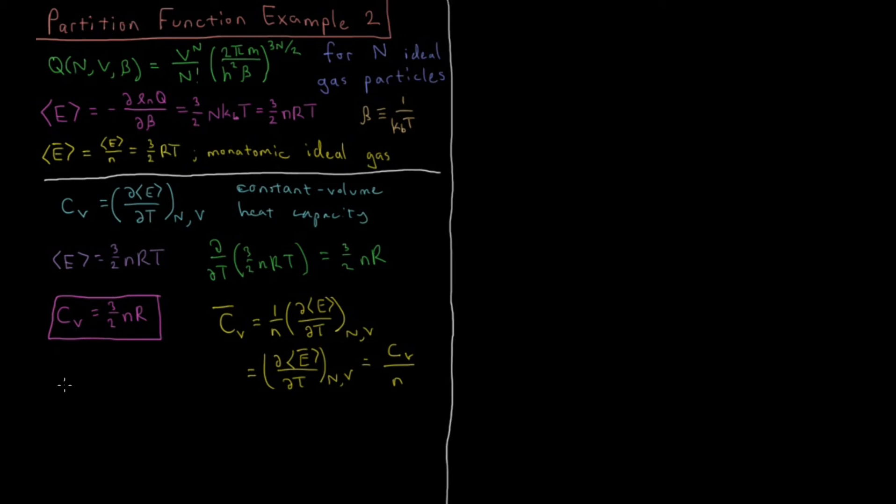So getting the quick result here, we have that our molar heat capacity is just going to be 3 halves number of moles times gas constant divided by number of moles. And that will very quickly get us to our final result for this video, that the molar heat capacity for a monatomic ideal gas as derived by this method is going to be 3 halves times the gas constant. So that would be the constant volume molar heat capacity.